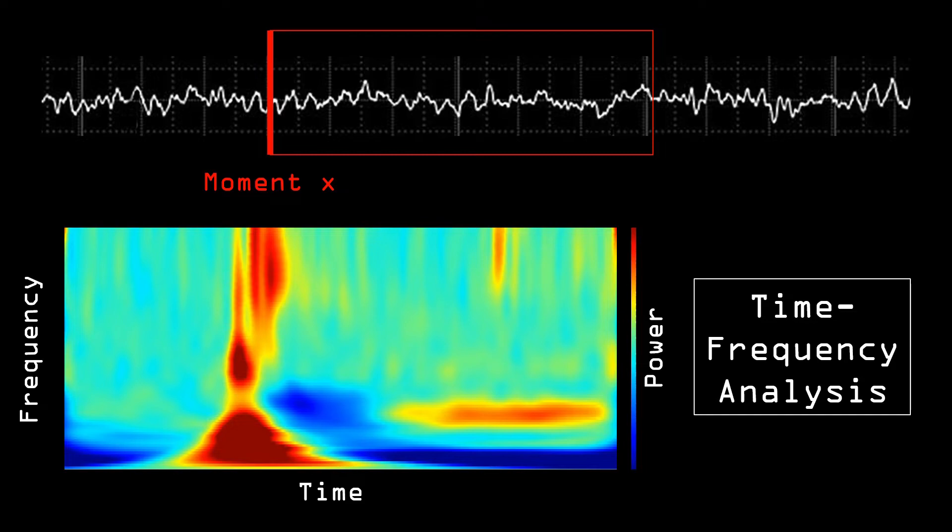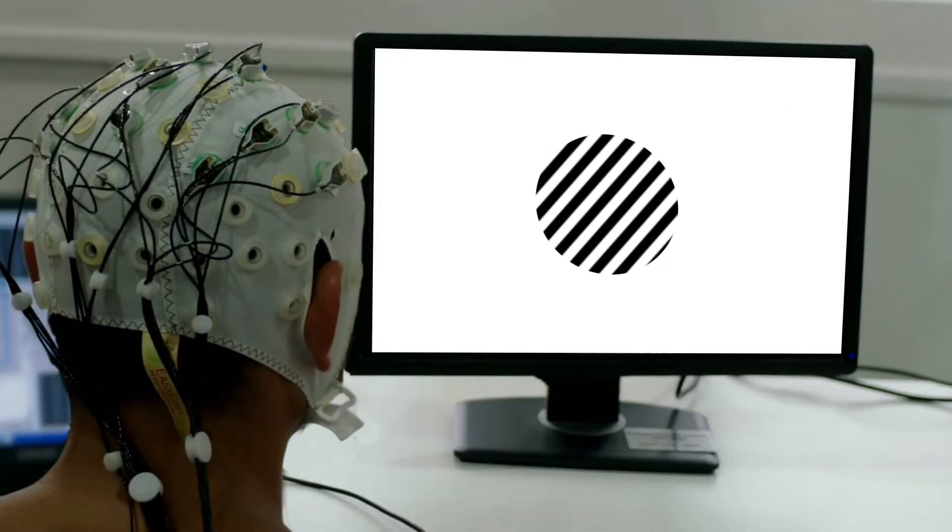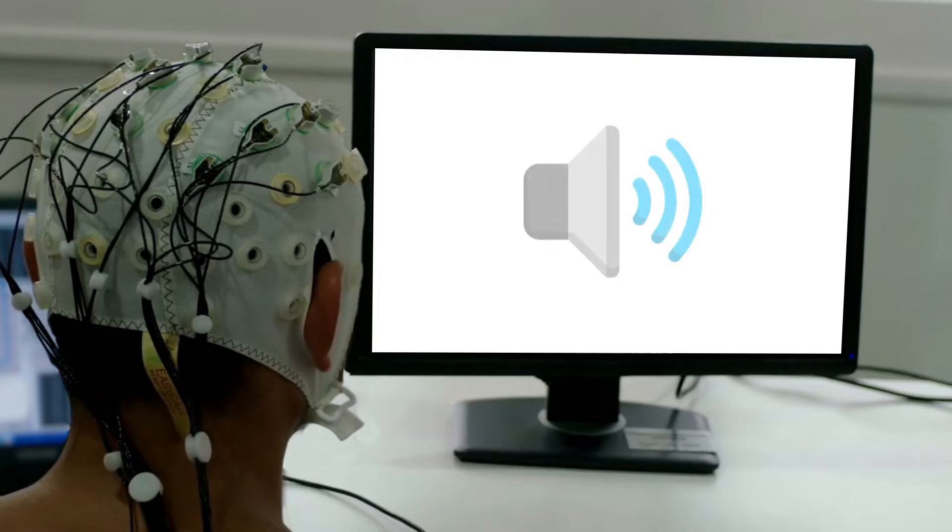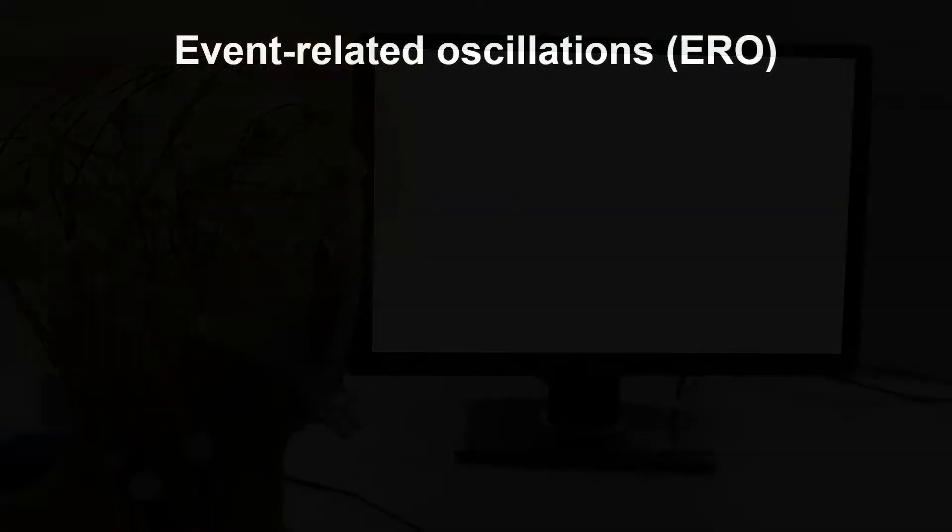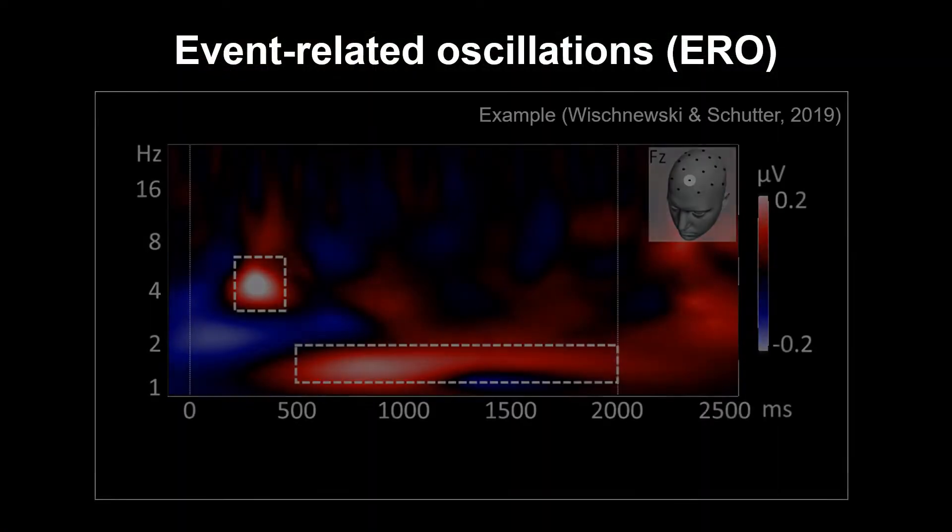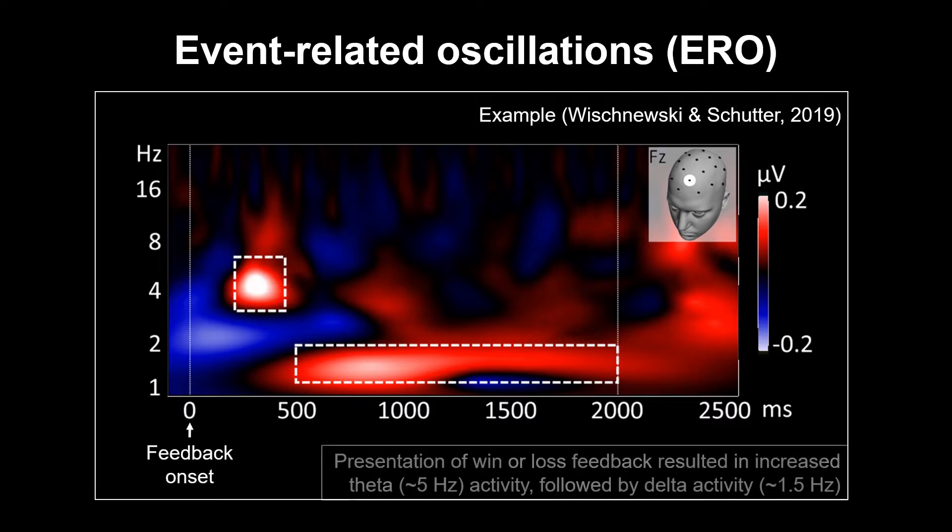One way to use time frequency analysis is after a specific occurrence, for example the presentation of a visual stimulus or the presentation of a sound. The brain will react to this event. As such, we can analyze these so-called event-related oscillations, abbreviated as EROs.